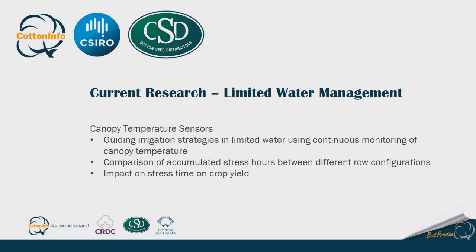Thanks Janelle and good afternoon everyone. As James and Mike have already mentioned, the challenges of managing limited water involve many factors including individual grower risk management approaches, and there is no single recipe. We have been investigating how continuous monitoring of canopy temperature can guide irrigation strategies for limited water, how crop water stress measured using canopy temperature relates to yield, and how this relationship is impacted by skip row configurations. Canopy temperature is not a new recipe, but a different tool that might complement existing tools like soil moisture probes.